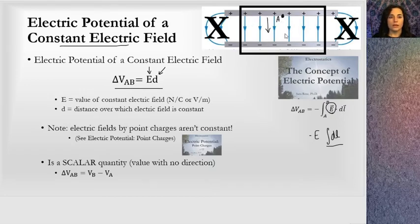So if I have a point A and I have a point B, I would be able to find the potential difference between those two points by multiplying the electric field by the distance between those two points. Notice again this is a constant electric field.